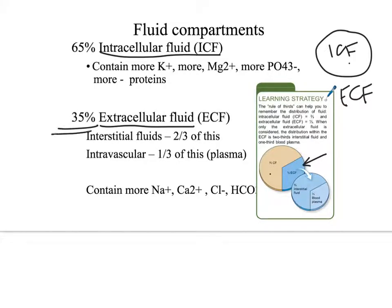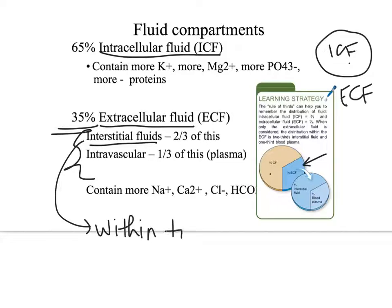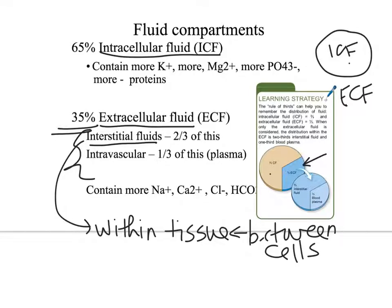35% is found in the extracellular fluid or ECF. You can break that 35% up further. Two-thirds of it is interstitial fluid — fluid within or between cells in the tissue. The remaining one-third is intravascular — what's in the vessels. So there's a rule of thirds, and then another rule of thirds within the ECF itself.